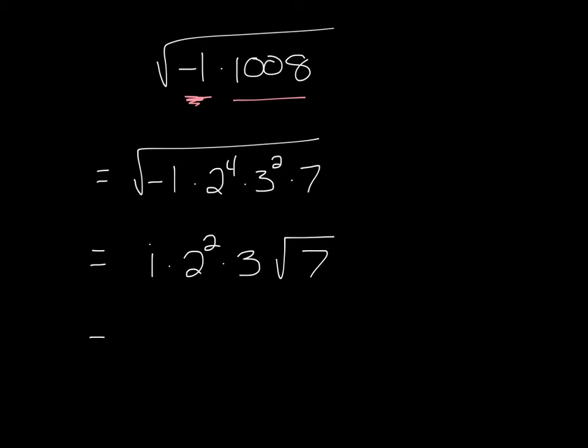And I'm just going to clean stuff up here, multiply these numbers, 4 times 3 is 12. I'll put the i after that, and then I have the square root of 7.